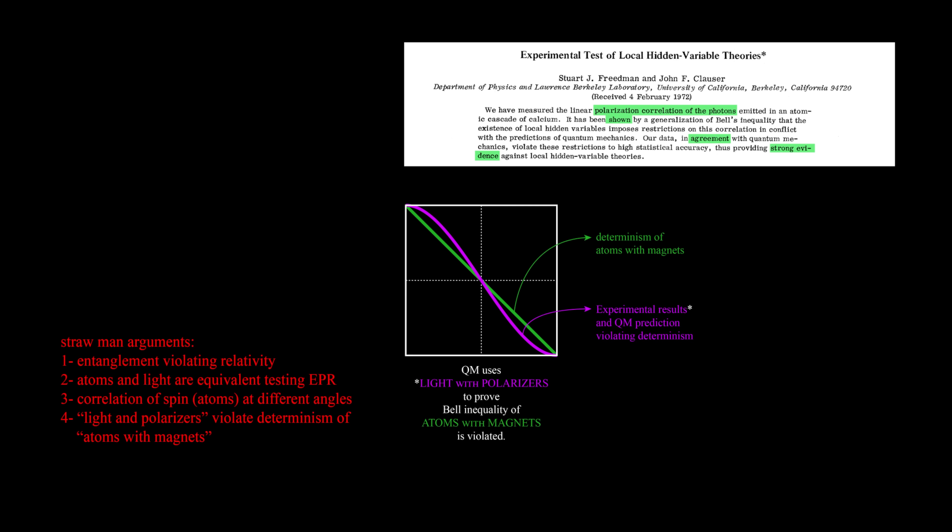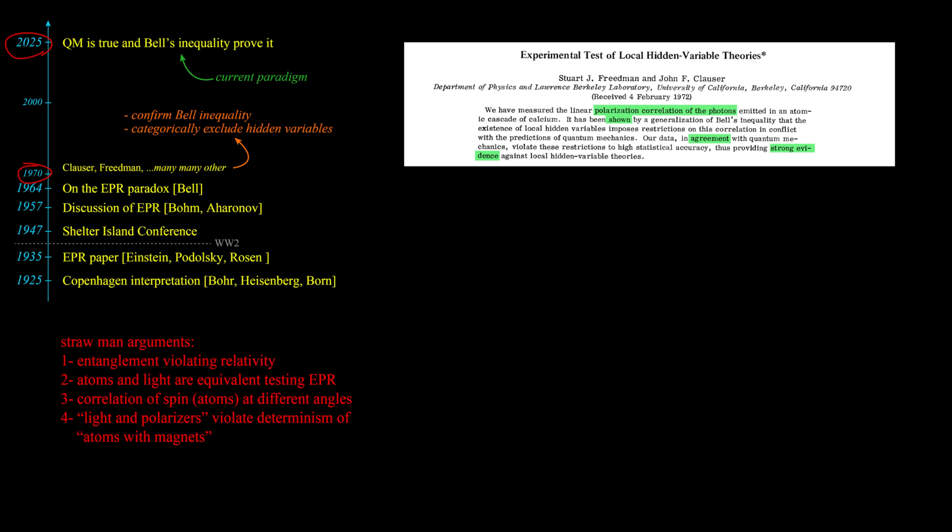The publication ends up with quantum mechanics predicting a level of correlations impossible for determinism. From the very beginning experiments are performed using light, and here we have another straw man. Quantum mechanics uses light and polarizers to prove Bell inequality of atoms with magnets is violated. Quantum mechanics says this is the deterministic model, while these are the experimental outcomes in agreement with its theory. Quantum mechanics is considering equivalent testing with light and atoms, so this discrepancy is not because of different experiments but because of different theories. And this is wrong. From the 70s up to these days, uncountable experiments confirmed that the hidden variable is an impossible explanation, and with Bell we are witnessing a real quantum effect.